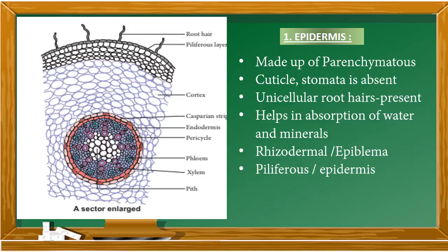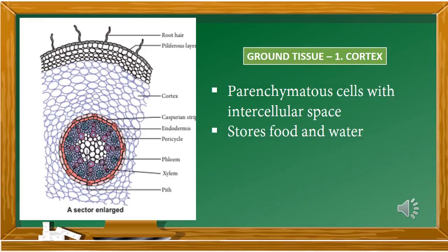From the parenchymatous layer, root hair arises. Unicellular root hairs are present, and their function is to help in absorption of water and minerals. The epidermis is made up of parenchymatous cells; cuticle and stomata are absent. It is otherwise called rhizodermal layer, epiblema, philliparous layer, or epidermis.